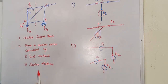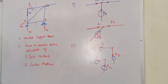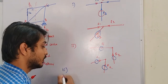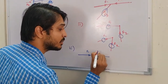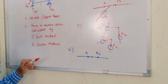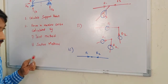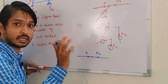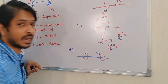Third trick: if two collinear members meet at a joint with no other member and no external force at that joint, then the forces in both collinear members are directly equal to zero.